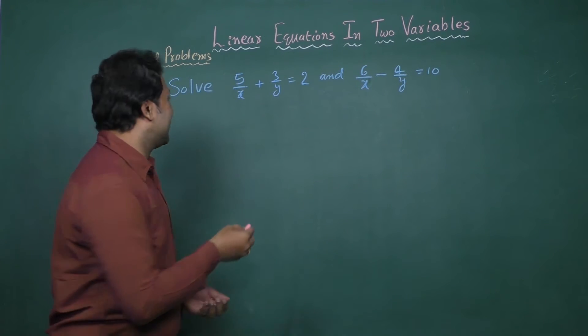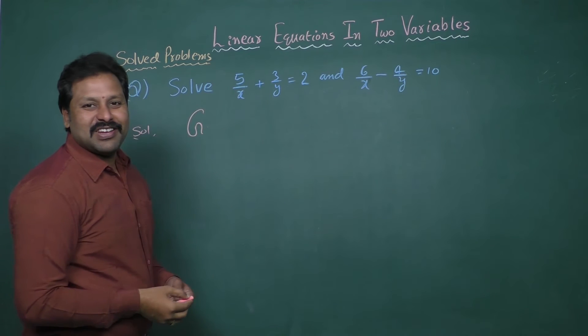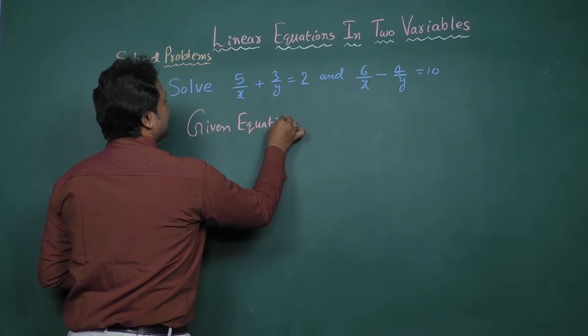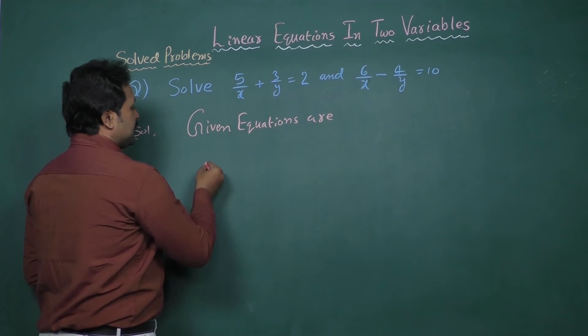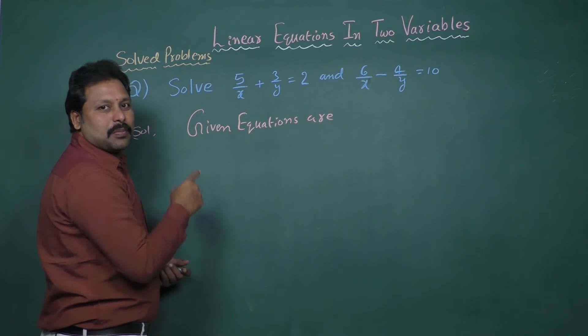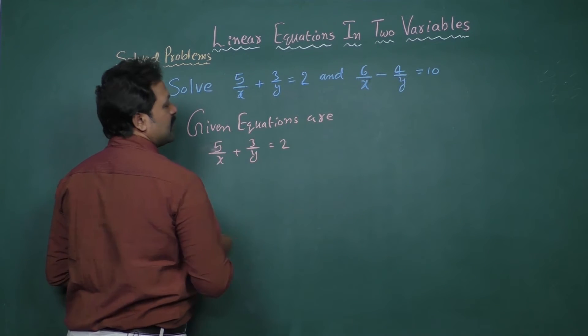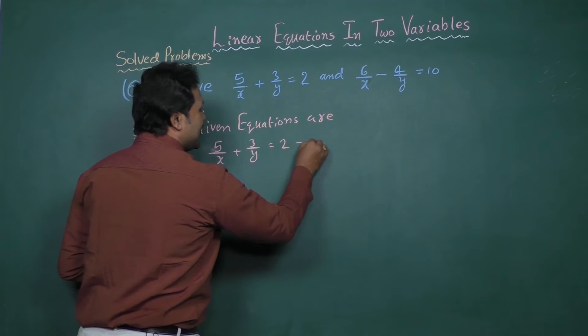Solution. Given equations are 5 by x plus 3 by y equal to 2. Let it be equation 1.